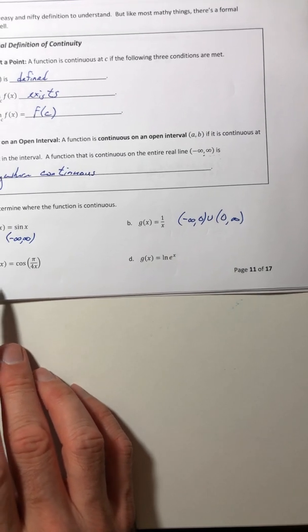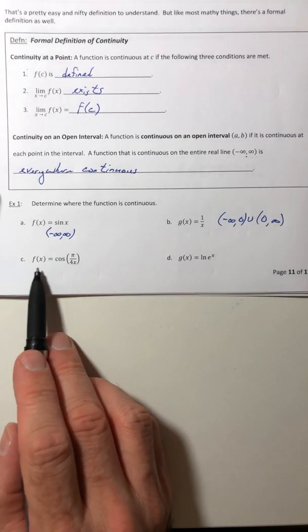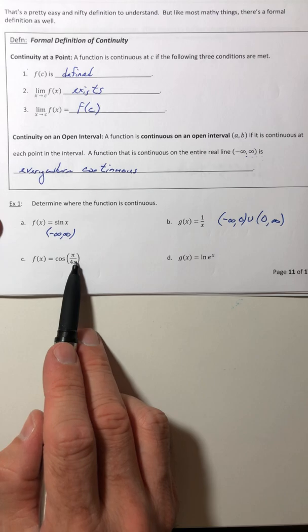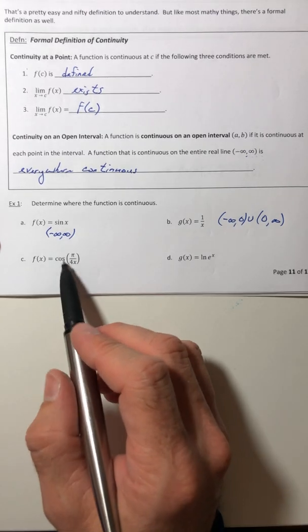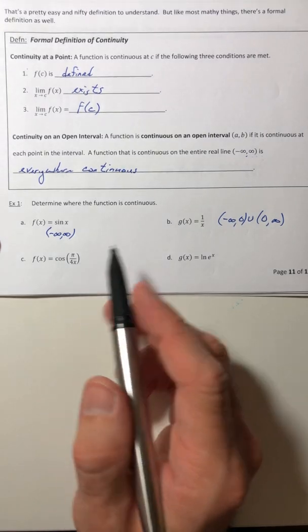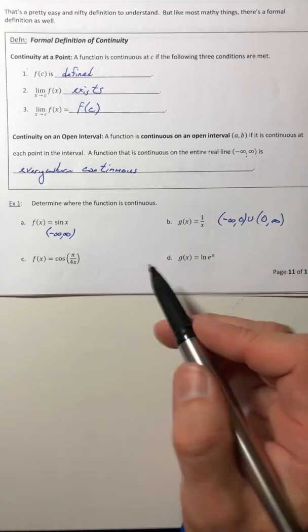So for part C, you've got the x in the denominator. So even though it's a cosine function, you have the x in the denominator. So you got to leave out the zero again.